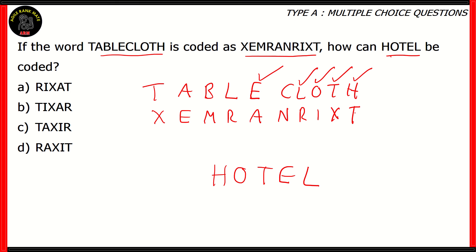For example, for H the code is T, which means options A and D are incorrect. Next, we have O in HOTEL and its code is I, which means option C is incorrect, while option B turns out to be the right answer. T corresponds with X, E corresponds with A, and L corresponds with R. And that's how you solve it easily.